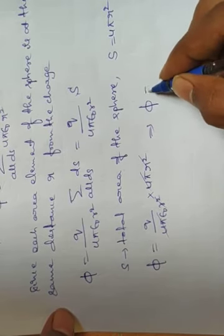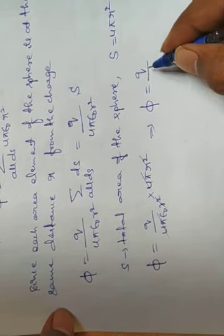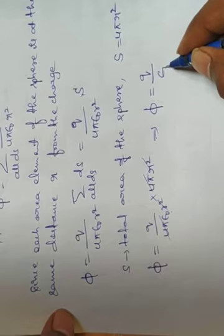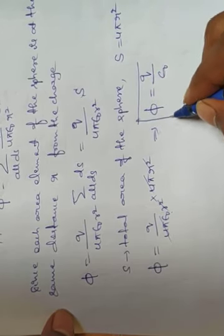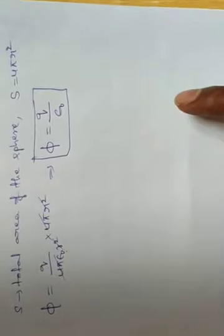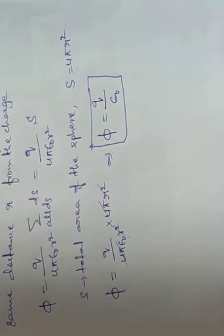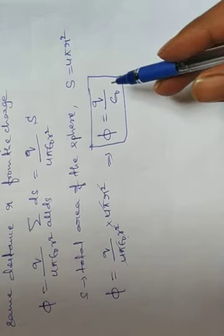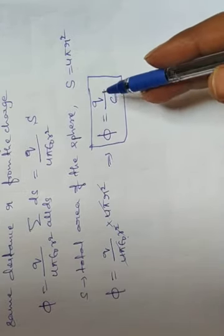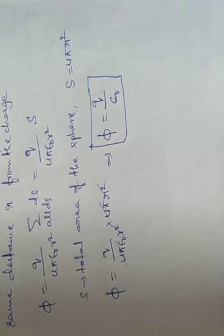Now 4πr² in the numerator and r² in the denominator cancel. What remains is φ = Q/ε₀. So the total flux enclosed by the charge Q on the sphere is equal to Q/ε₀. This is nothing but the proof of Gauss's law — the total electric flux through any closed imaginary surface equals 1/ε₀ times the charge enclosed by the surface.